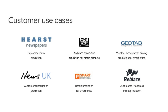We currently have a wide range of customers trying BigQuery ML with really interesting results. Hearst Newspaper is using BigQuery ML to predict customer churn. 20th Century Fox is using it to build media plans for new movies. Geotag, an application for smart cities, has a plugin that uses BigQuery ML to predict accidents or aggressive driving based on weather patterns. News UK is using it for customer subscription prediction. Smart Parking uses it for traffic prediction. And Reblaze, a security application, uses BigQuery ML for automated IP address detection.